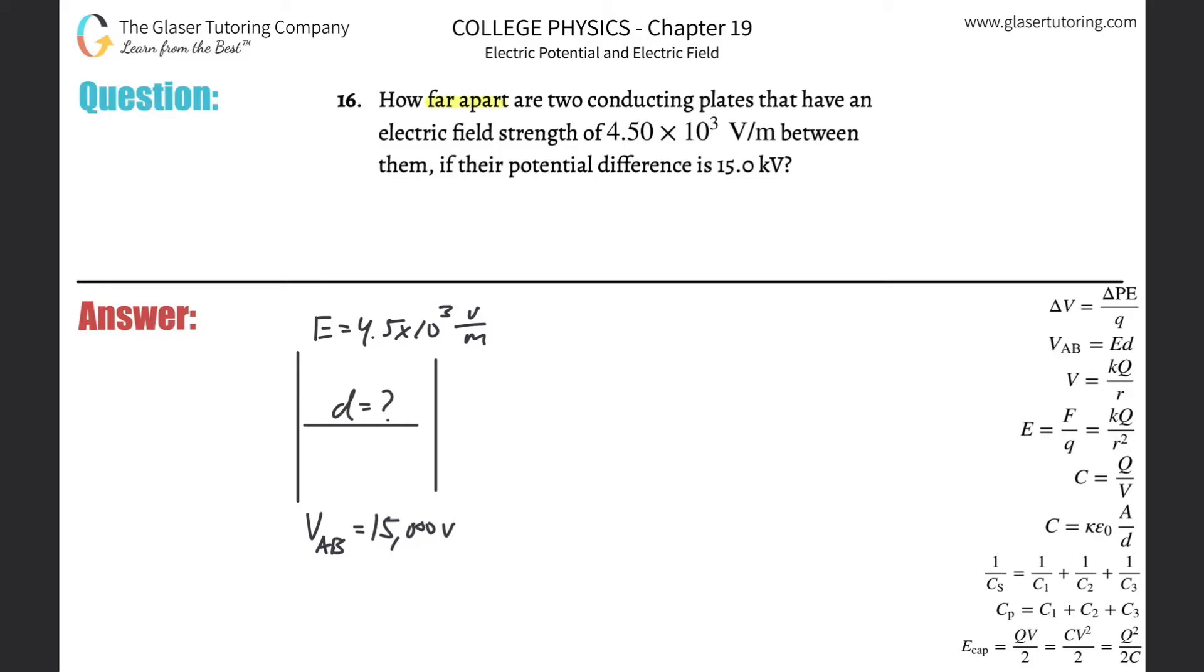Number 16: How far apart are two conducting plates that have an electric field strength of 4.5 times 10 to the third volts per meter between them if their potential difference is 15 kilovolts? So the first thing I notice is it's kilovolts, so I need to convert that into volts. That's going to be 15,000 volts.